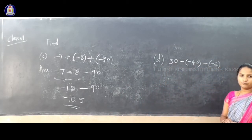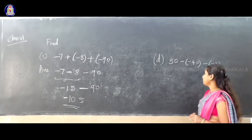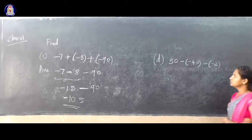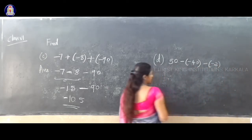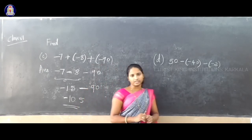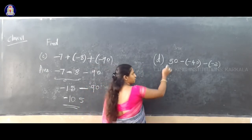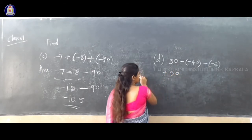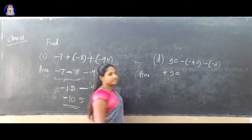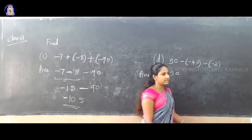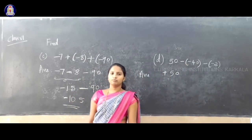In the last questions here, fourth question in integer: 50 minus of minus 40, minus of minus 2. So here, the 50 is plus 50, a positive integer. Write plus 50, and you have to remove the bracket. So we will get minus into minus.